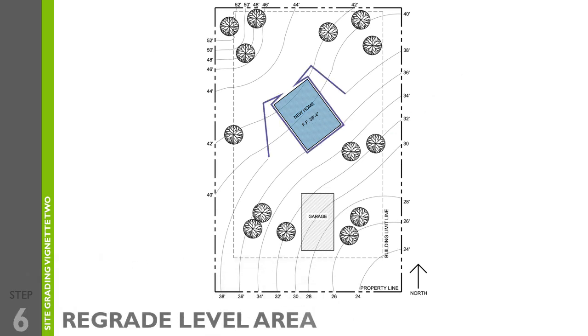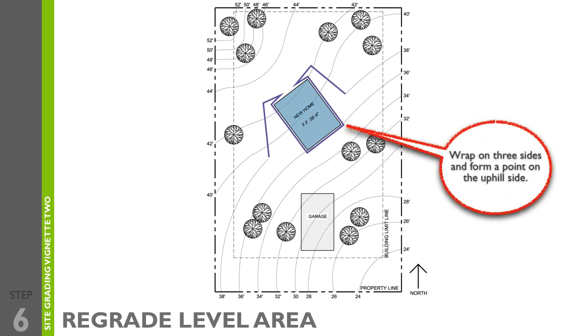Step number six is to regrade the level area. Regrade the level area contour line so that it wraps completely around the new home on three sides and forms points on the uphill side that are close together but don't touch. Be sure not to enclose this area or water will not drain properly.